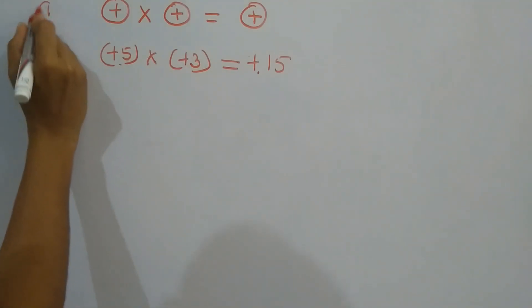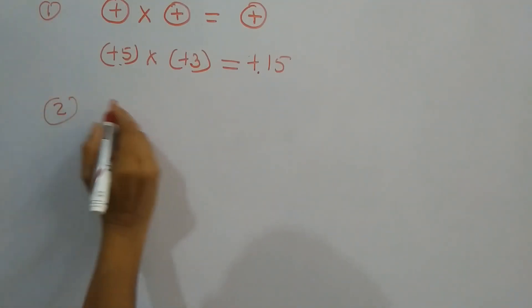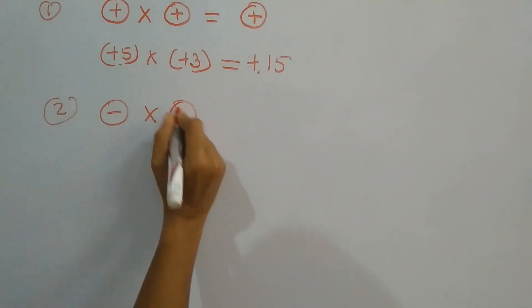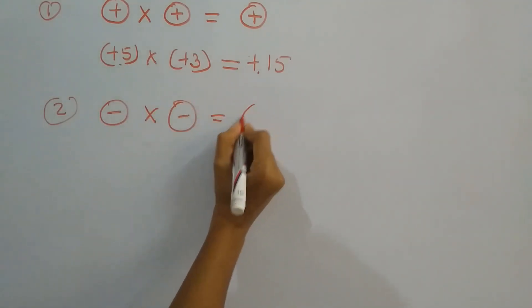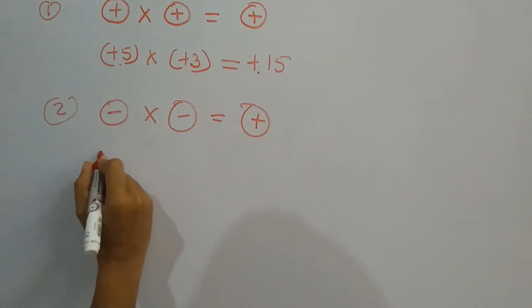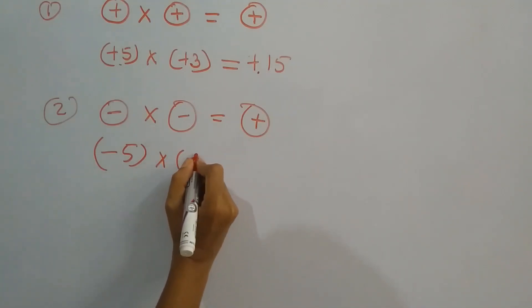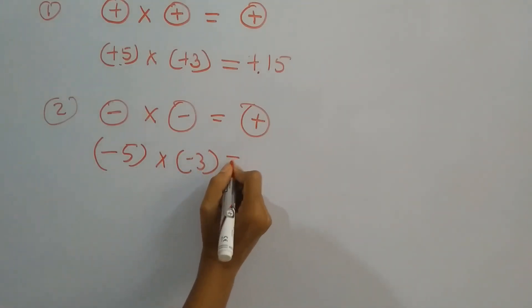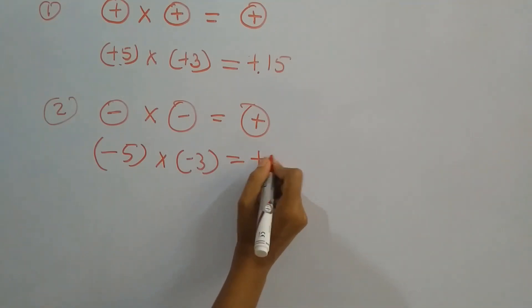In the second case, if both numbers are negative, the answer will always be a positive number. That is, minus 5 into minus 3 is equal to plus 15.